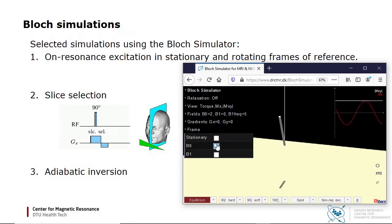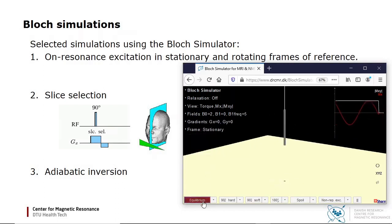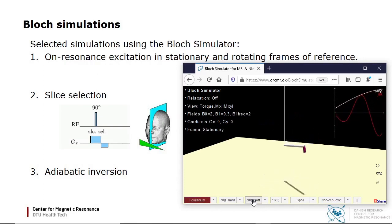I now switch back to the stationary frame of reference and choose the equilibrium initial condition. Let's see how a 90 degree pulse affects the magnetization. The purple bar is the torque from the B1 field, which indicates in which direction the magnetization is pushed by the RF pulse. At resonance, these pushes consistently increase the excitation angle.